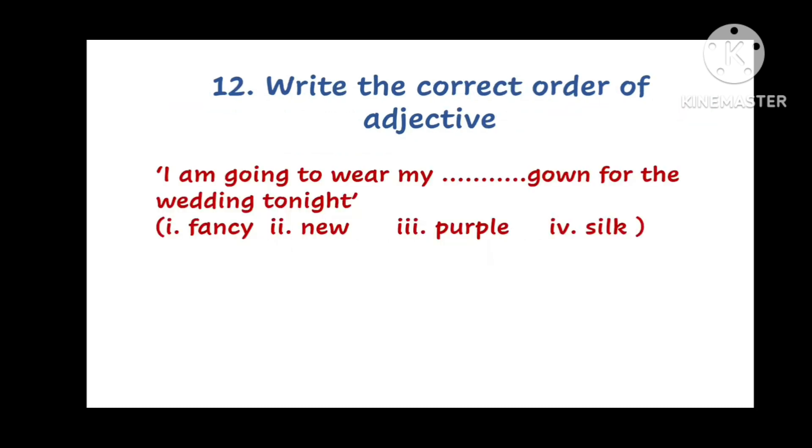Next question. Write the correct order of adjectives. I am going to wear my dash gown for the wedding tonight. And the words to be arranged in order are first fancy, second new, third purple, and fourth silk. And what should be the correct order? Should it be A. Second three one fourth. Or B. First third second fourth. Or C. First fourth second third. Or D. First second third fourth. You can take your time. Pause the video. Think and write the correct order.